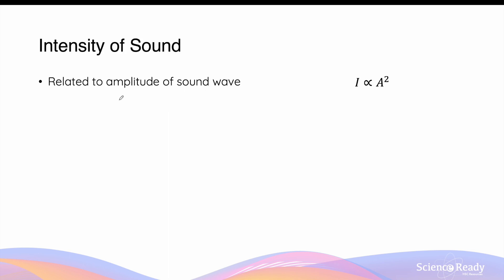This video is on the intensity of sound and the inverse square law. Intensity of sound is related to the amplitude of sound waves — specifically, intensity is directly proportional to the square of the sound wave's amplitude. This means if we double the amplitude of a sound wave, the intensity of sound increases by four times.